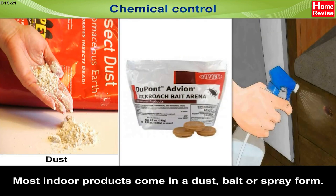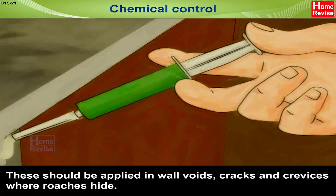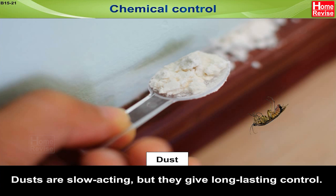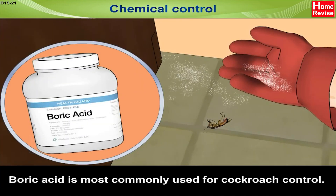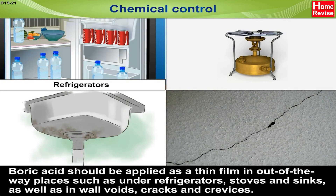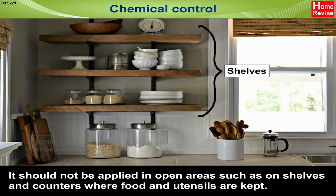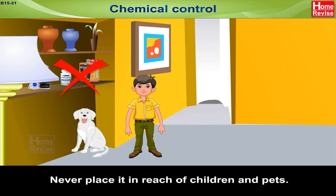Chemical control: most indoor products come in a dust, bait or spray form. These should be applied in wall voids and crevices where roaches hide. Dusts are slow acting but give long-lasting control. Boric acid is most commonly used for cockroach control. Boric acid should be applied as a thin film in out-of-the-way places such as under the refrigerator, stoves and sinks, as well as in wall voids, cracks and crevices. It should not be applied in open areas such as on shelves and counters where food and utensils are kept. Never place it in reach of children and pets.